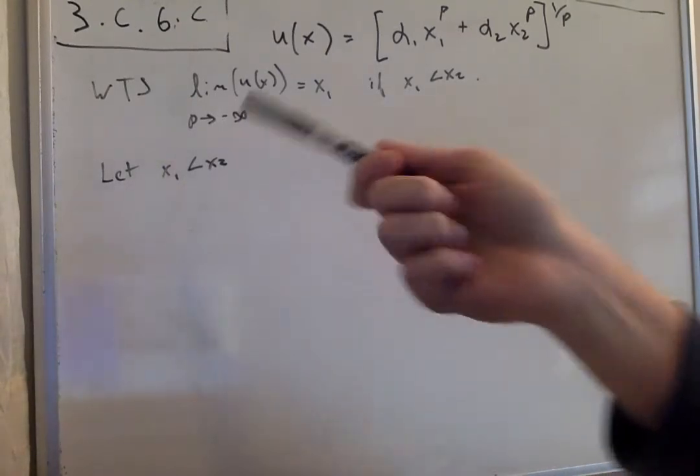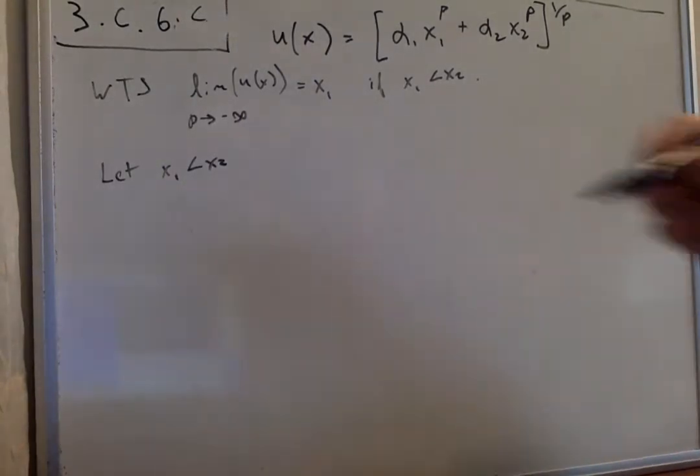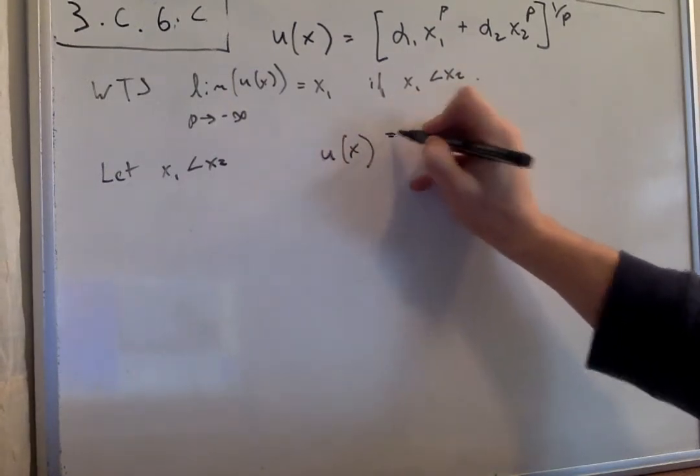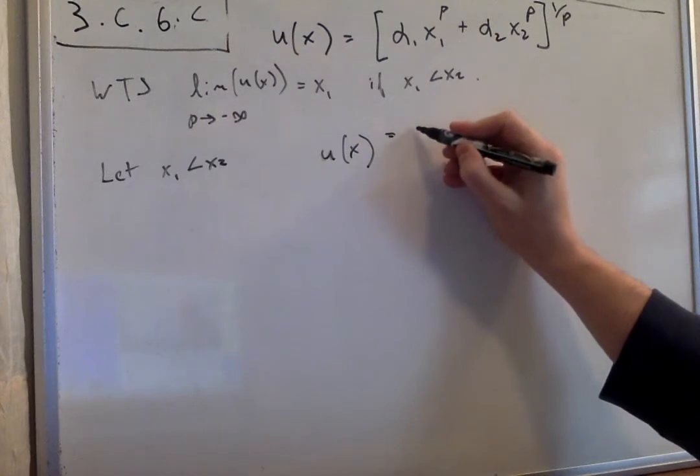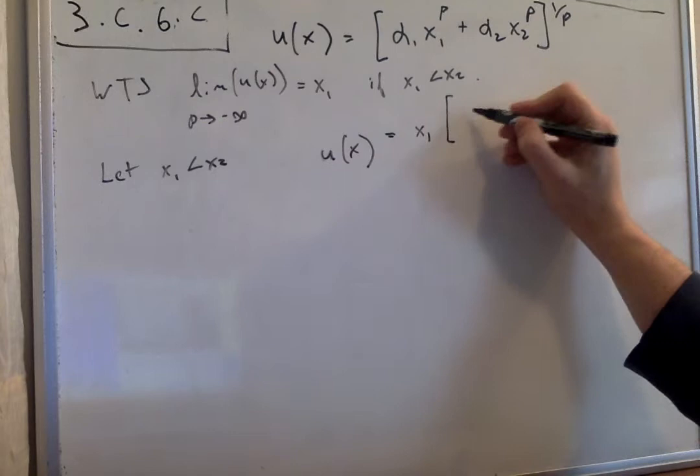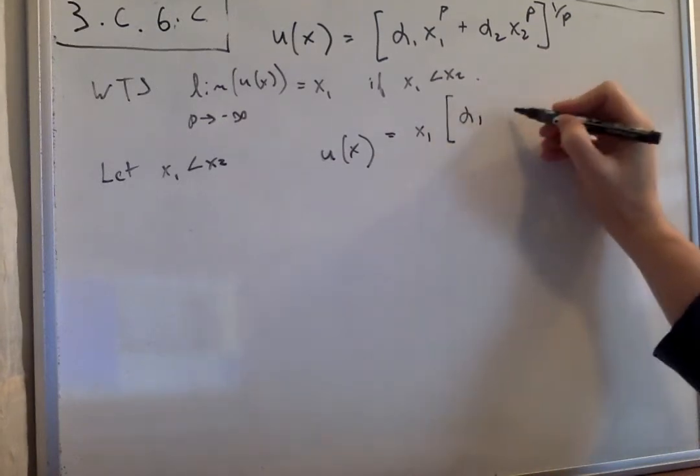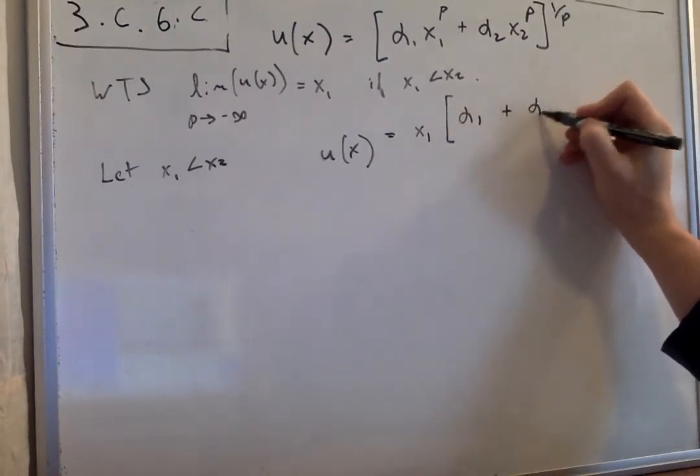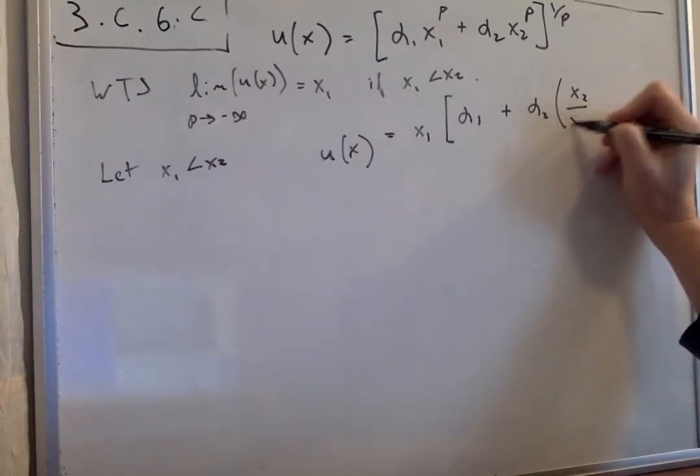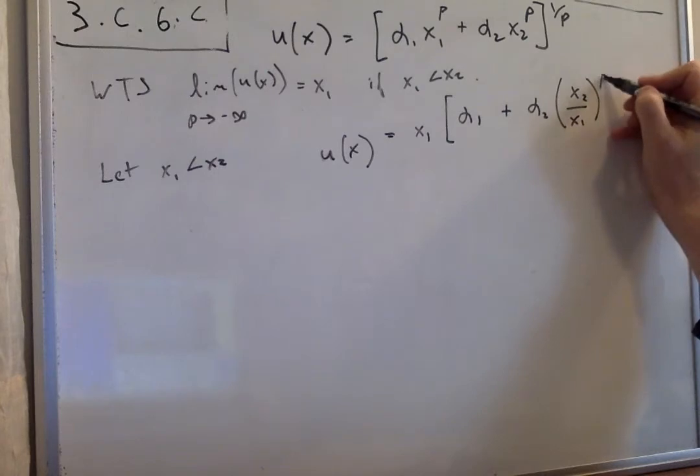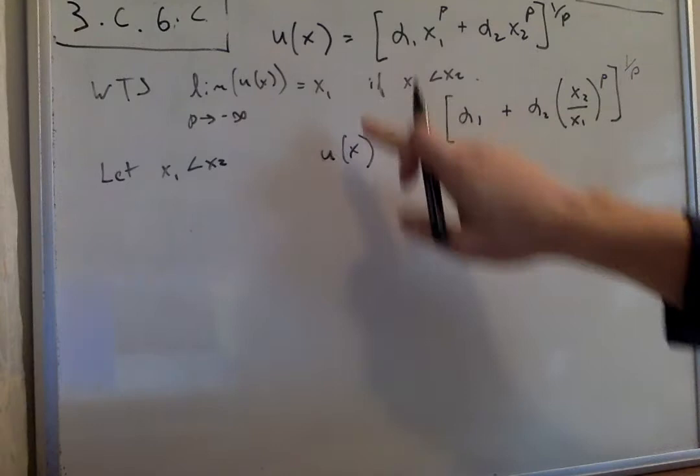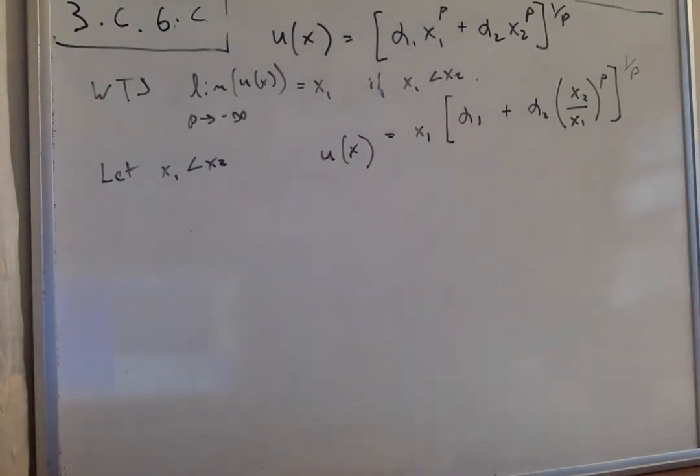We're going to let x₁ < x₂ and write u(x). We can factor this by pulling out x₁, assuming x₁ does not equal zero. If x₁ equals zero, you should mention that, though it's easy to work through. For all cases where x₁ doesn't equal zero, we can write u(x) like this.